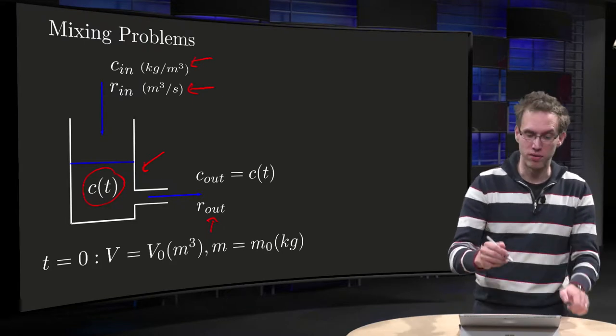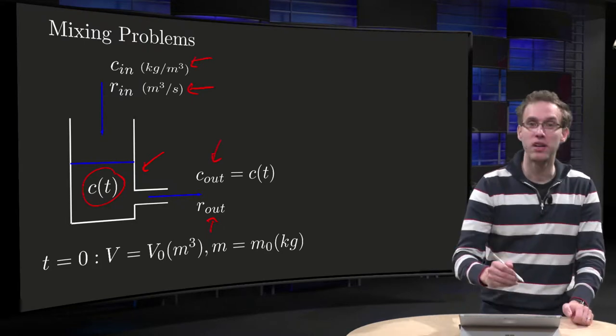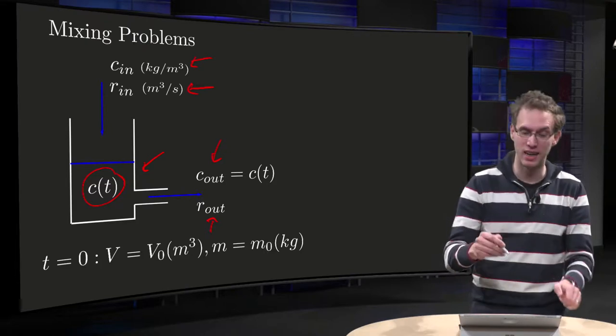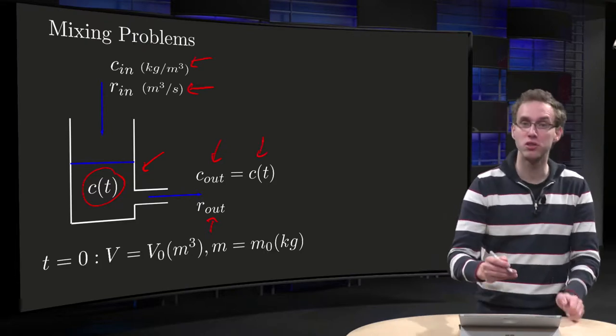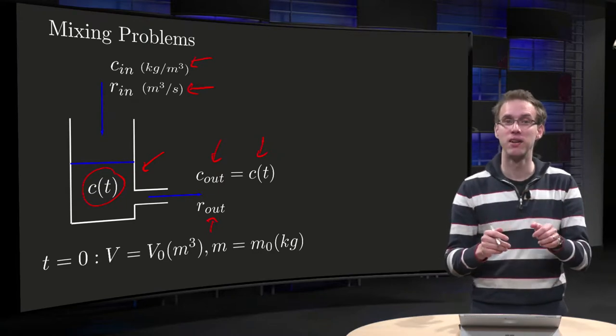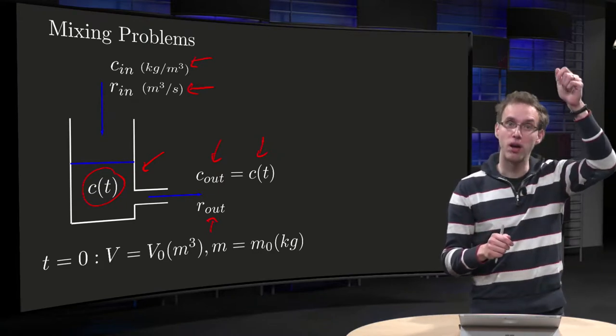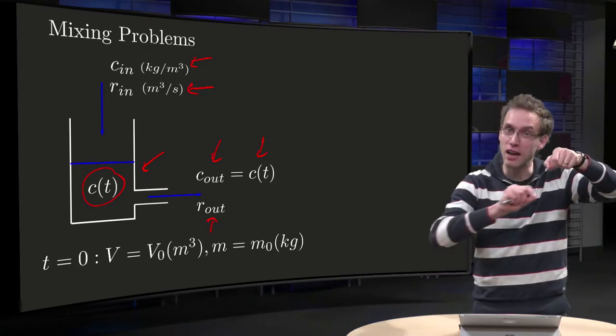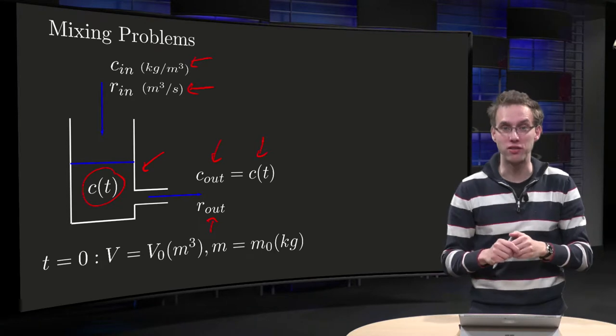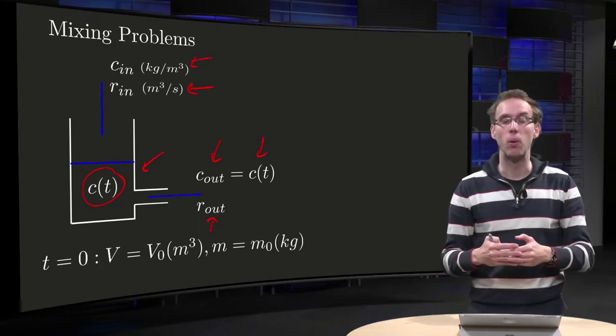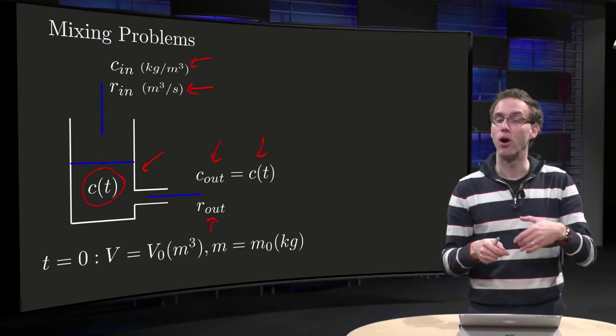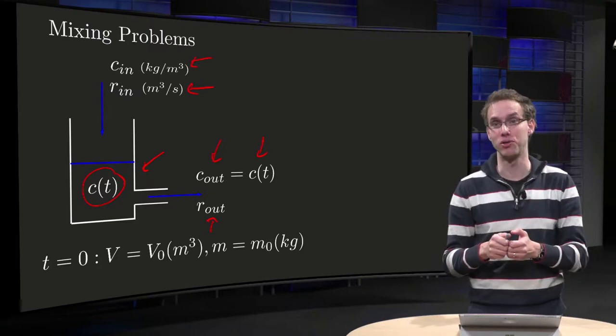And in the outlet we also have a concentration, c_out, and since the tank is well stirred, this c_out concentration equals c of t, the concentration of salt in the tank. So we get some liquid in with some concentration, so we get mass of salt in, and something goes out as well. And the question is, what happens to the total mass of salt in the tank, or what happens to the concentration of the salt in the tank?